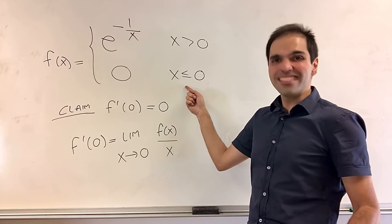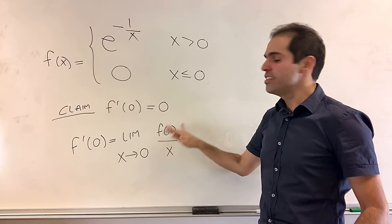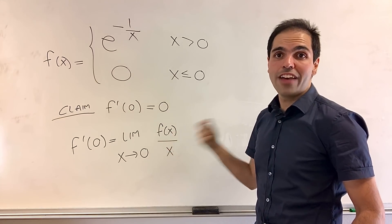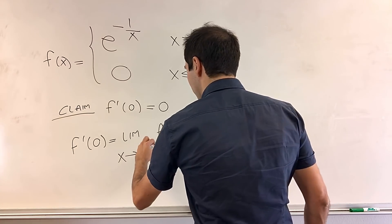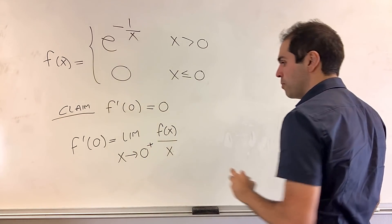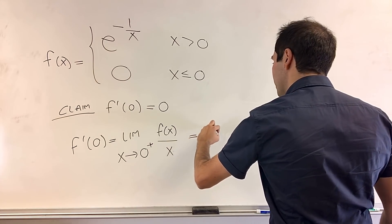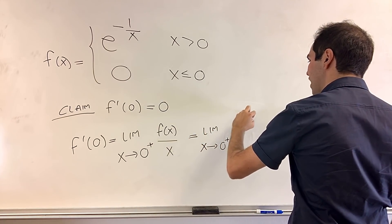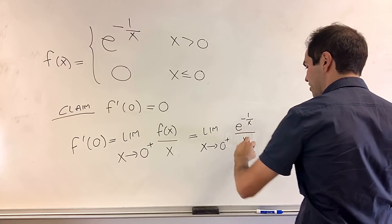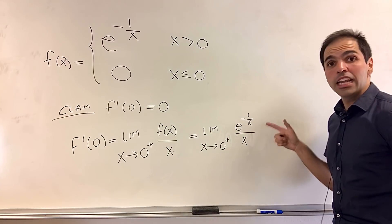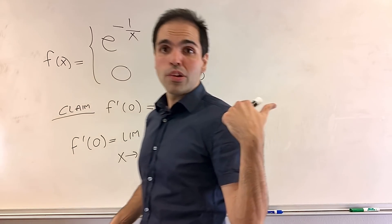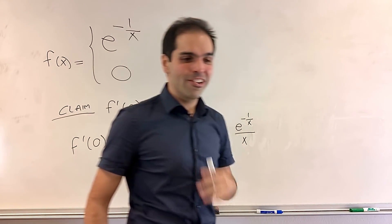And well, if x is negative, then this is zero anyway. So really the interesting case is if x goes to zero from the right. So let's do limit x goes to zero plus of that, which is limit x goes to zero plus of e of minus one over x over x. And I'm claiming that this is zero. And if you try L'Hôpital's rule, you'll see it doesn't really work.